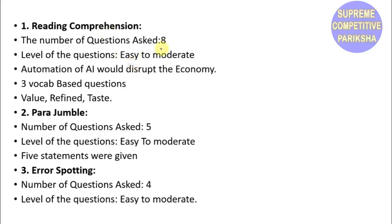Reading Comprehension had 8 questions with easy to moderate level. The topic was Automation of Artificial Intelligence would disrupt the economy. There were 3 vocabulary questions asking for synonyms and antonyms, including words like refine and test.